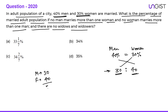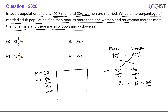Total population is 70. 40% of 30 = 12 married men, and 30% of 40 = 12 married women, so total married population = 24. The percentage of married adults = 24/70 = 240/7 = 34 and 2/7 percent.